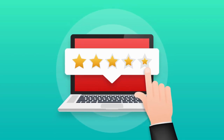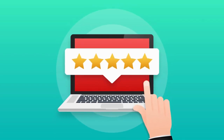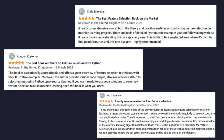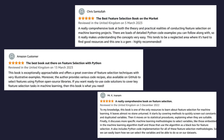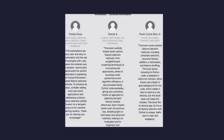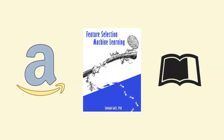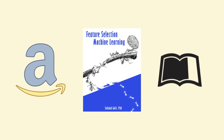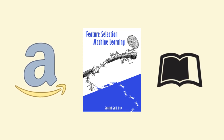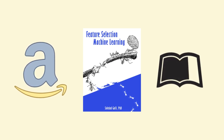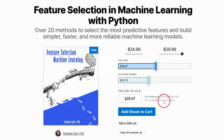But don't just take our word for it — hear what our readers are saying. Feature Selection for Machine Learning with Python is available on Amazon and LeanPub. And here's the best part.